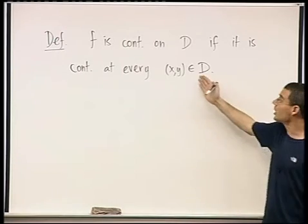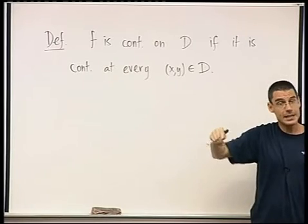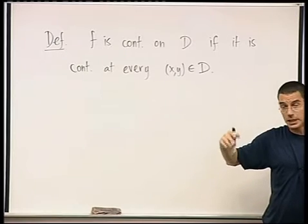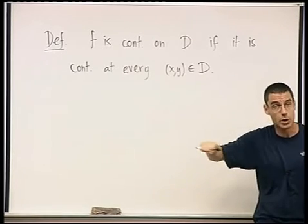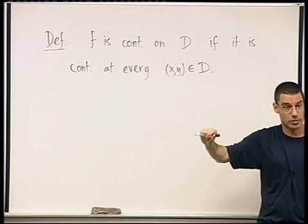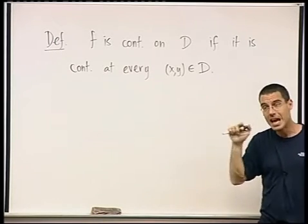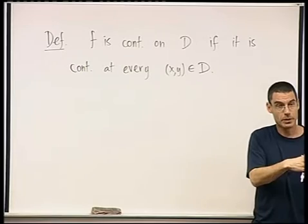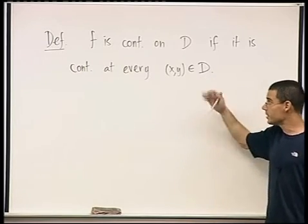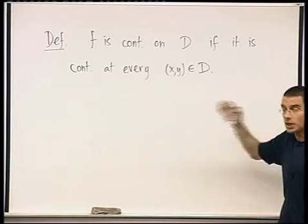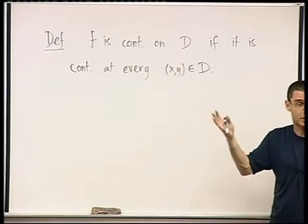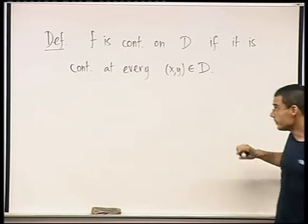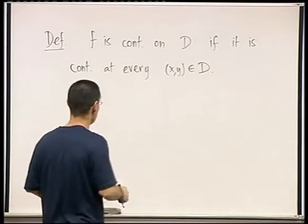And then you might ask, okay, how do we check continuity at a boundary point? And that's going to be similar to how you checked continuity on a closed interval. Remember? In calc 1, when we discussed continuity on a closed interval, at every point inside the interval, it was just the definition of continuity. And then on endpoints, we had continuity from the left and continuity from the right. Remember that? Okay? At endpoints. So here, at boundary points, we're going to have to discuss only continuity when you approach from inside the domain, or something like that. I don't want to get into the details. I want to avoid this. Okay? So this is the idea of continuity on a domain D.